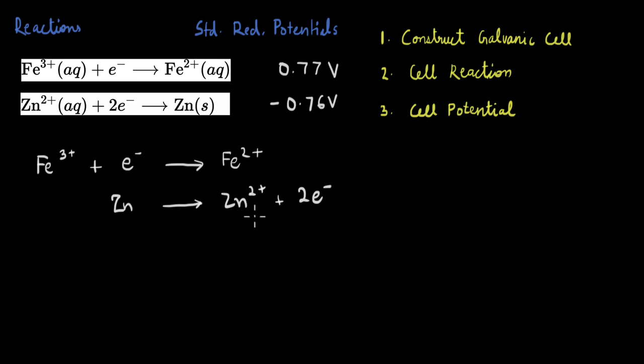Now, to get the cell reaction, we need to add these half reactions. But before that, because there is one electron on the left-hand side and two of them on the right-hand side, we need to multiply this reaction by 2. So we get something like this. And now, if we add both of these half reactions, we get this reaction, which is going to be our cell reaction.